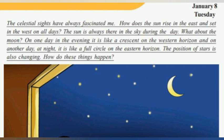On one day in the evening, it is like a crescent on the western horizon. And on another night, it is like a full circle on the eastern horizon.